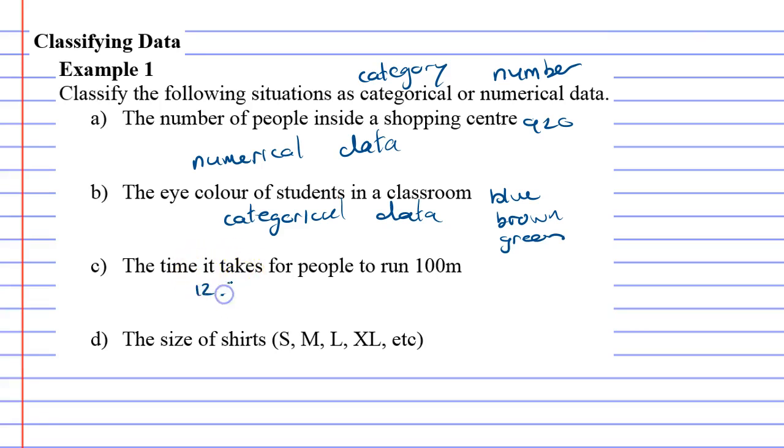It might take you 12.3 seconds, which is a number, so that's numerical. And last of all, the size of shirts, which are small, medium, large, extra large. These are not numbers, so it must be category, categorical data.